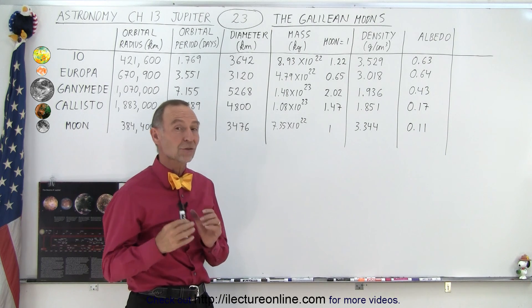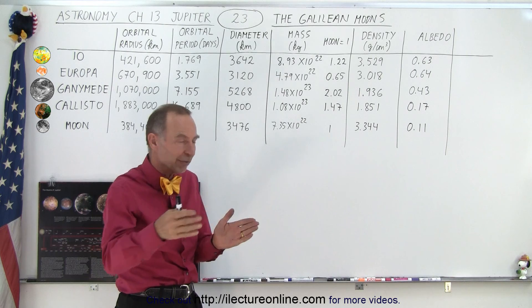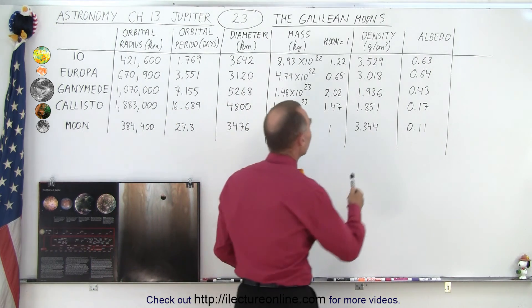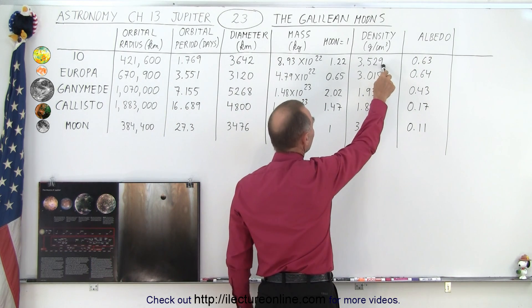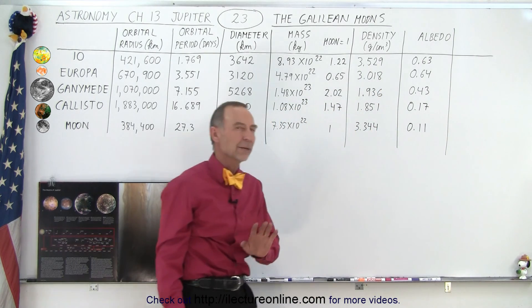Density-wise, we see a very interesting trend. Just as the planets become less dense as you go farther away from the sun, it turns out that the density of the moons also diminish as you go further out from Jupiter. Now you may say, wait a minute, Earth is the most dense planet, which is true. However, that is compressed density.